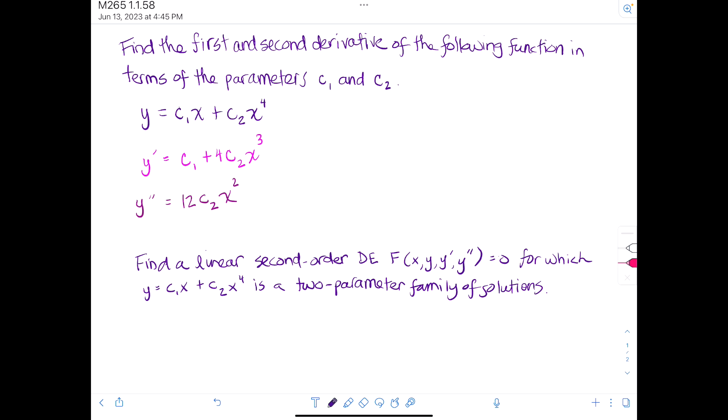So we had over here that y double prime was 12 c2 times x squared. So if we isolate c2, we would get y double prime divided by 12 x squared.